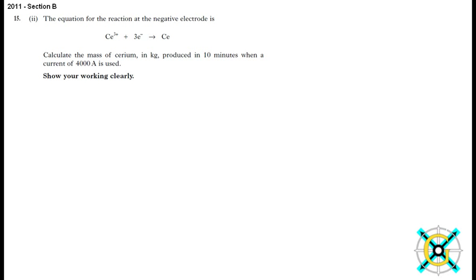The first thing to do is to know our equation for working out the coulombs. Q equals I, which is current, times time, which is in seconds. So this is amps here, and this is in seconds, which is here in minutes.